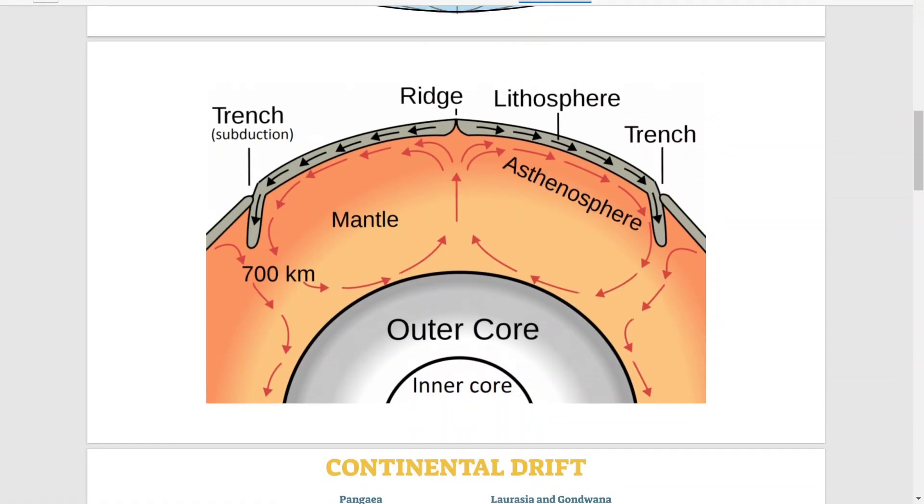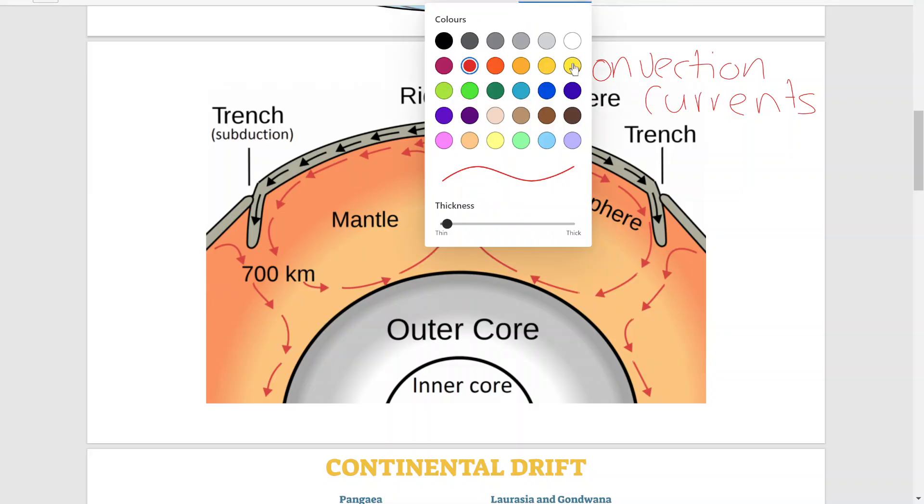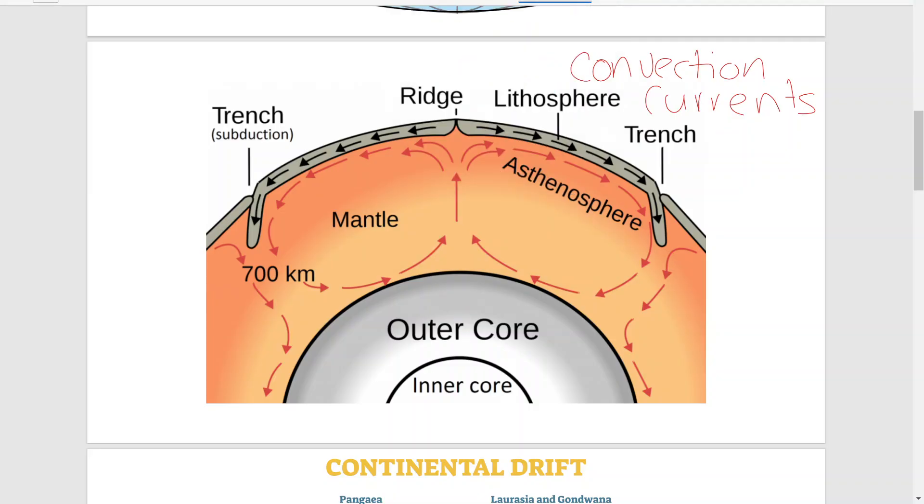Convection currents are the driving force behind the movement of plates. They work in the mantle underneath the crust and as they move, they drag the plates with them. What you can see is the magma that is nearest the core gets heated, and as it gets heated, it begins to rise up. But as it rises, it cools because it's moving away from its heat source and can't maintain a constant heat. And then as it cools, it moves to the side.